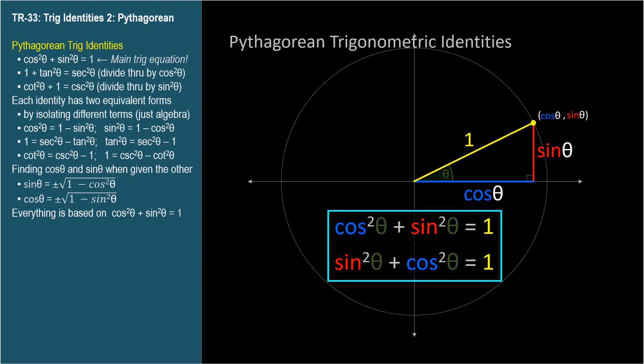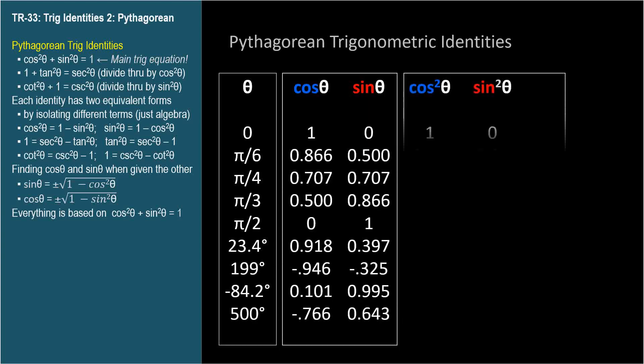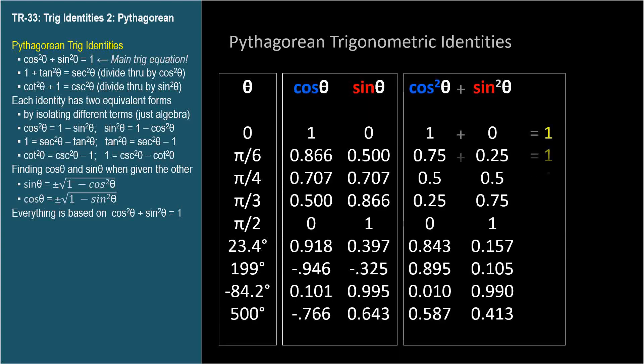There aren't many things in this series I suggest you memorize. In fact, I try hard to show you how little you really need to memorize. But this identity you should know. We can try the sine and cosine of angles we know, or any angle, and prove to ourselves that the identity is always true.